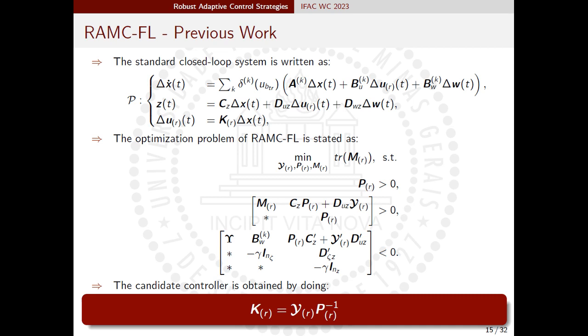The optimization problem of RAMC-FL is stated as minimizing the H2 norm given an a priori provided H-infinity attenuation level. Thus, the second LMI comes from the trace condition of the H2 problem and the third LMI comes from the minimization of the H-infinity norm. The candidate controller feedback gain is computed considering the Lyapunov variable, which as aforementioned is considered to be fixed.